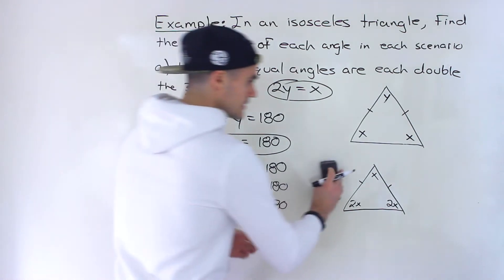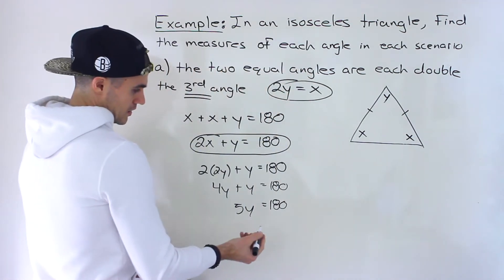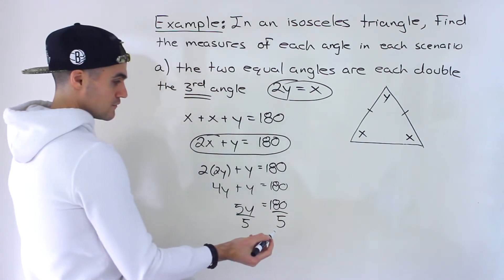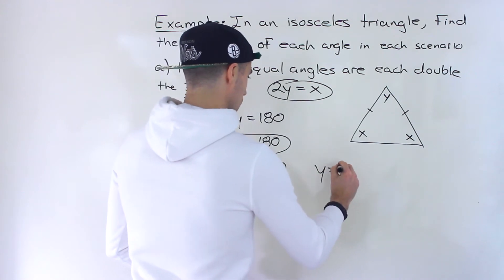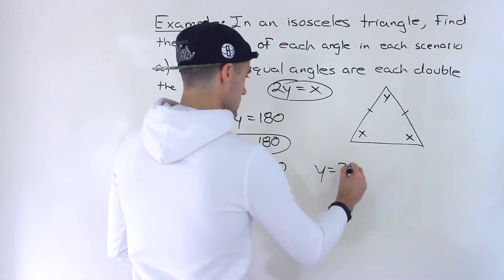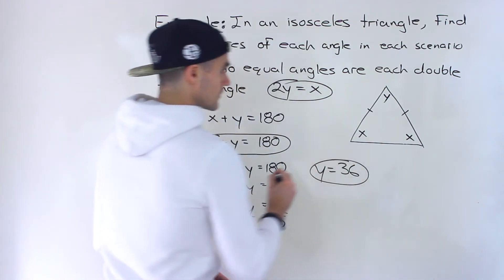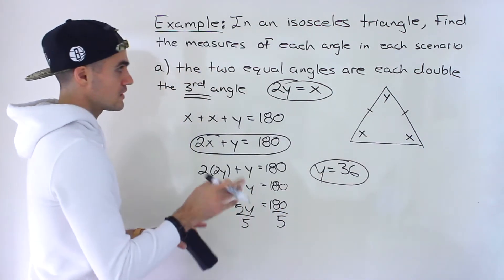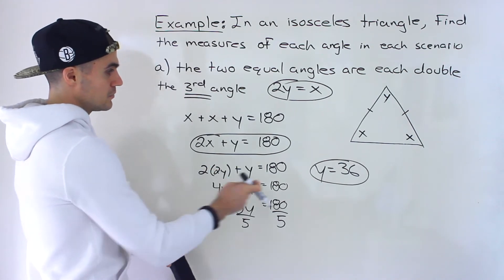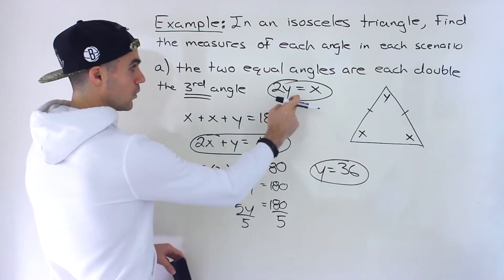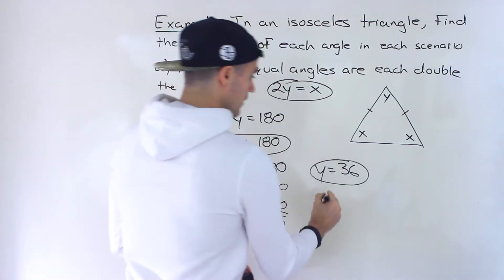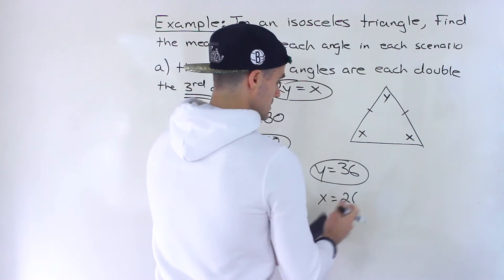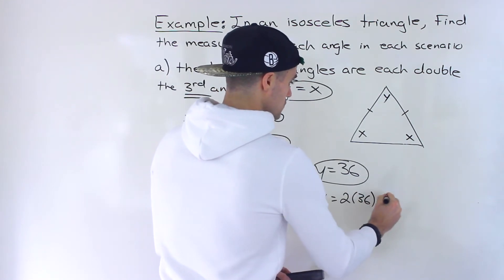Going back to our equation, we can divide both sides by 5, so y equals 36. That's what the third angle is going to be. To solve for x, we plug in 36 for y: x equals 2 times 36, which gives us 72.